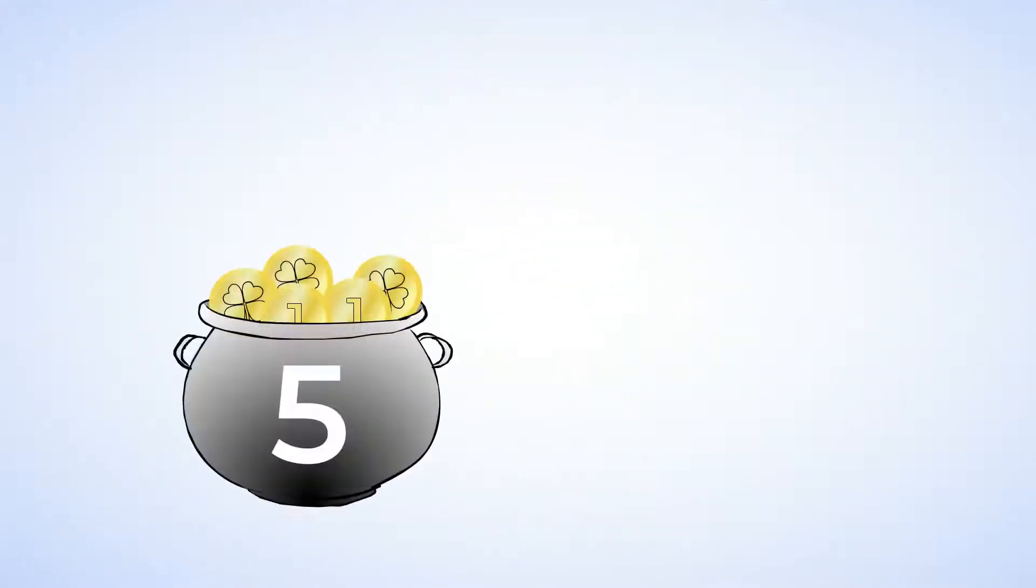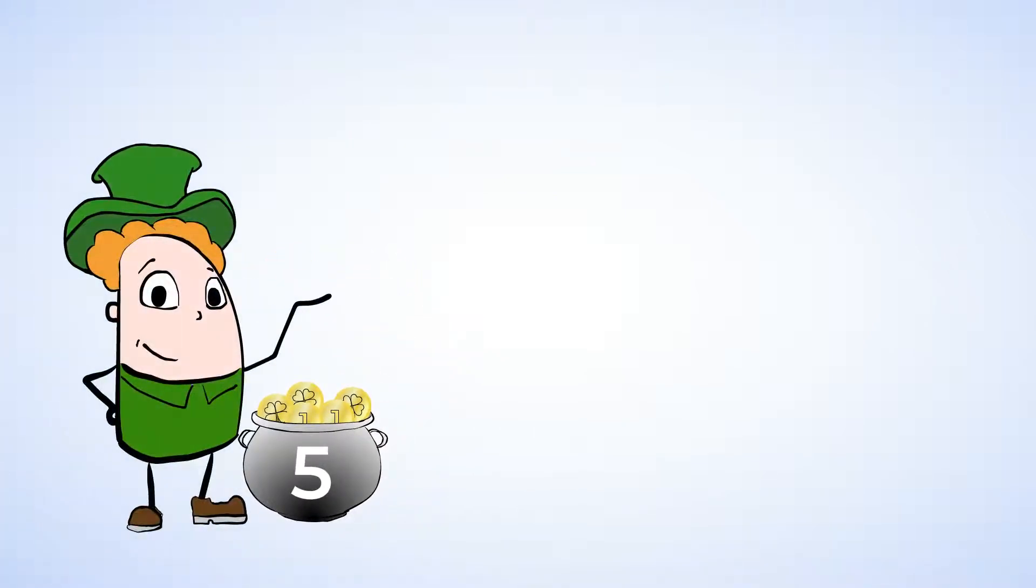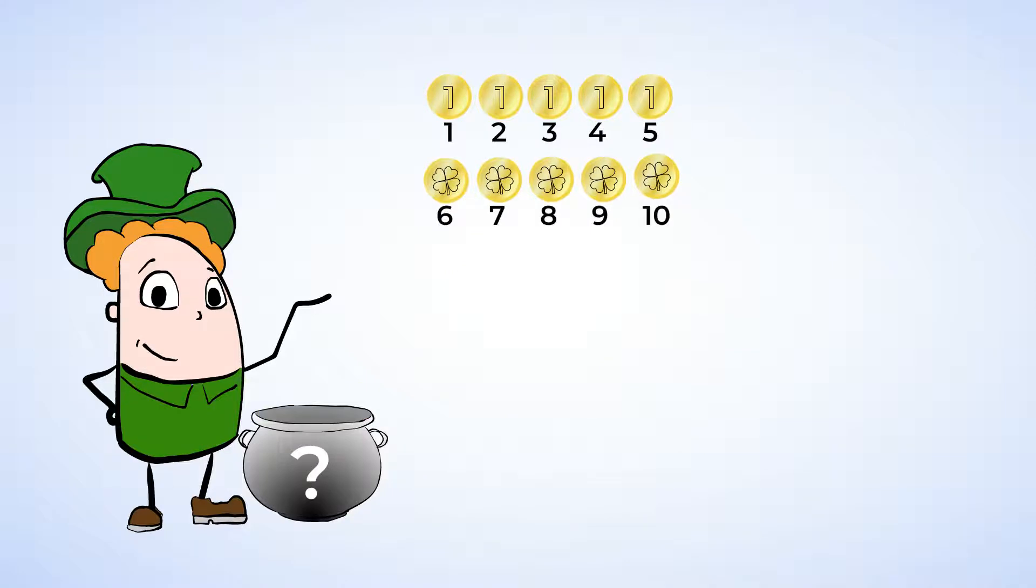This pot of gold has five coins in it. But look, a leprechaun runs by and puts five more gold coins in it. How many gold coins are in the pot of gold now? Well, let's take them out and count them. One, two, three, four, five, six, seven, eight, nine, ten. Ten gold coins. Perfect.